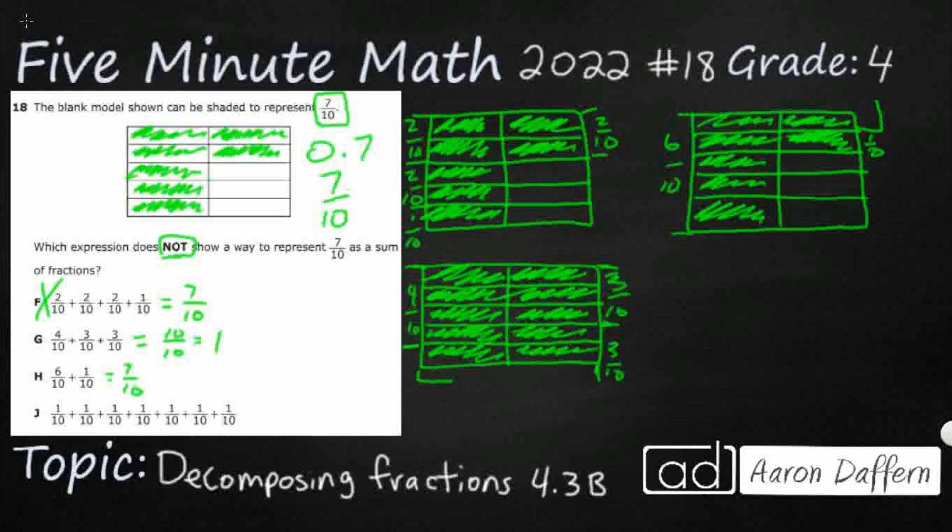And this final one - the denominators are the same, but let's see how many we've got: one, two, three, four, five, six, seven. So it's good. The one we don't want is going to be G. So that's our answer.